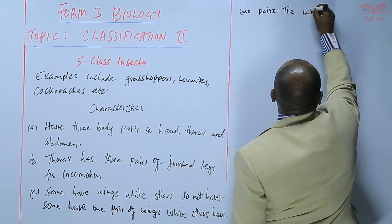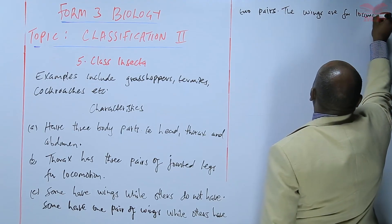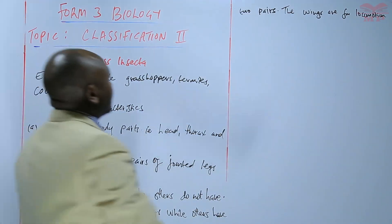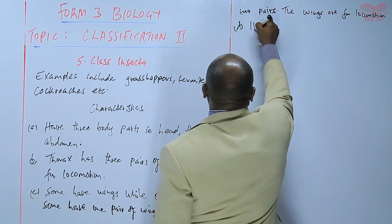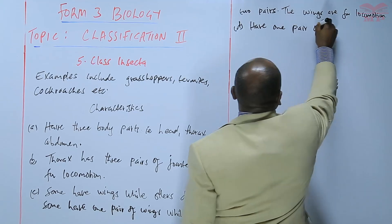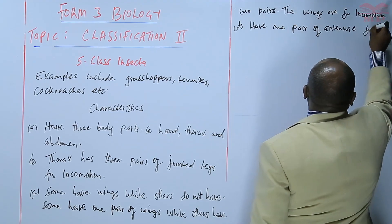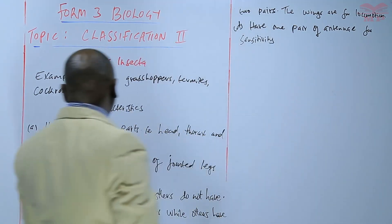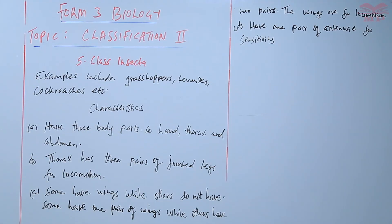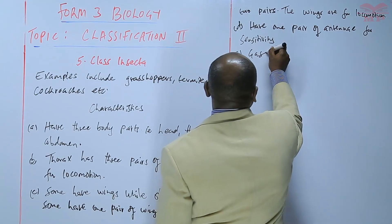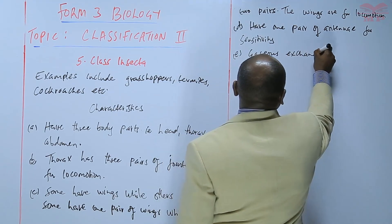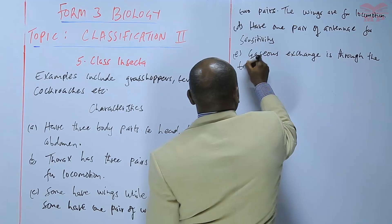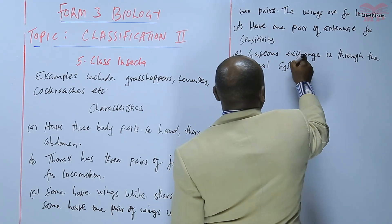So the wings are for locomotion. Another unique feature is that they have one pair of antennae for sensitivity.